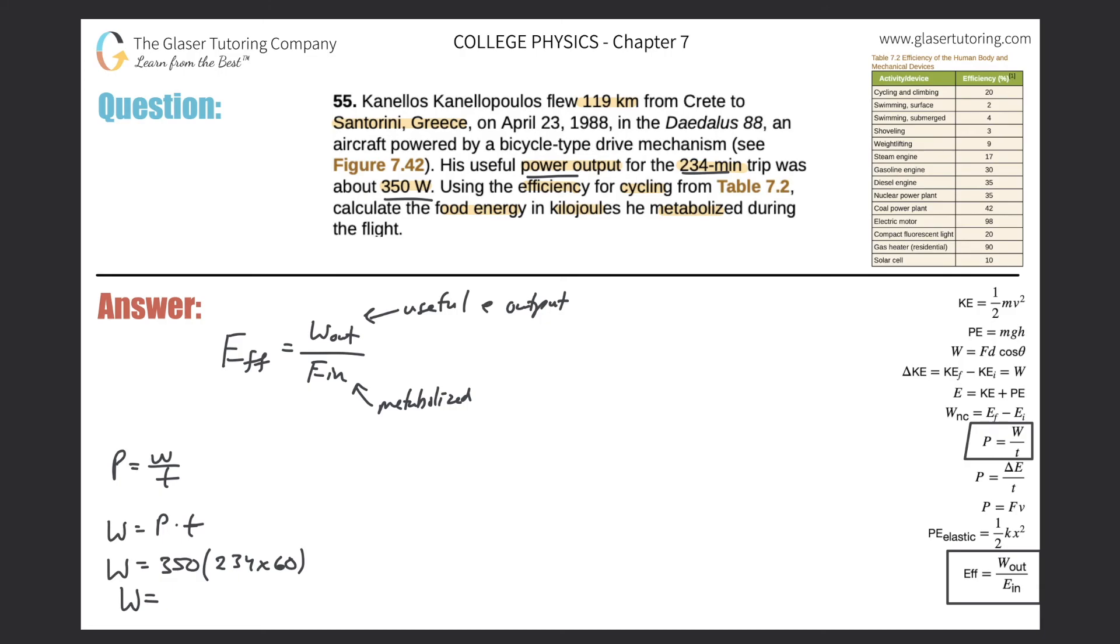All right, so the work that he put out was 350 times 234 times 60. All right, so this works out to be about 4.91 or so. So 4.91 times 10 raised to the, what do we got here? 3, 6, and that is in terms of joules. So this is the useful work he put out.